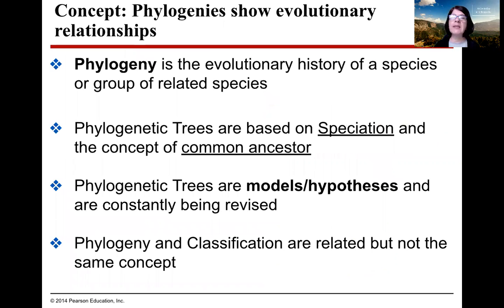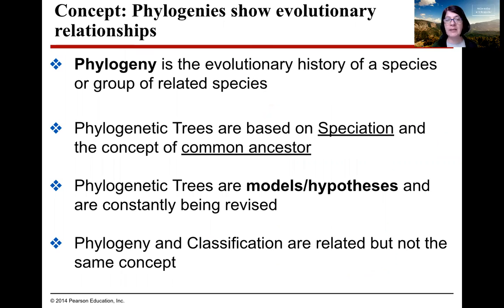Phylogenetics and phylogeny really show the evolutionary relationship between organisms. Phylogeny is the evolutionary history of a species or a group of related species. Phylogenetic trees are based on the process of speciation and the concept of a common ancestor. Phylogenetic trees are actually only models — they're hypotheses, so they're constantly being revised.